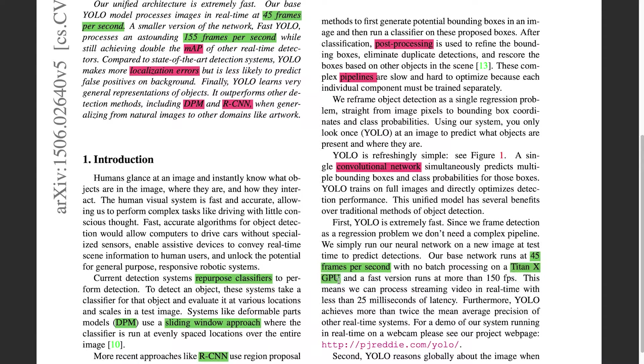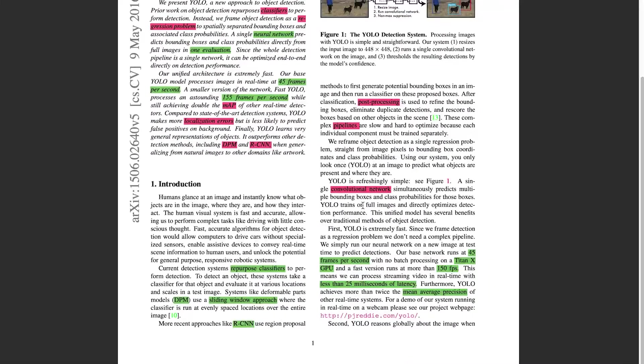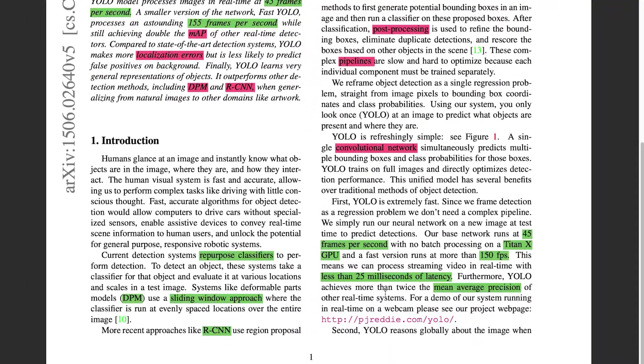So Titan X GPU, that's just a graphics processing unit. 150 FPS, less than 25 milliseconds of latency. Furthermore, YOLO achieves more than twice the mean average precision. So if you'd already looked up what MAP means, that is actually what mean average precision. Great demo. So this is an important link to note down. Once you're done reading this paper, feel free to look at that link. It will give you a very good idea on what the source code looks like.